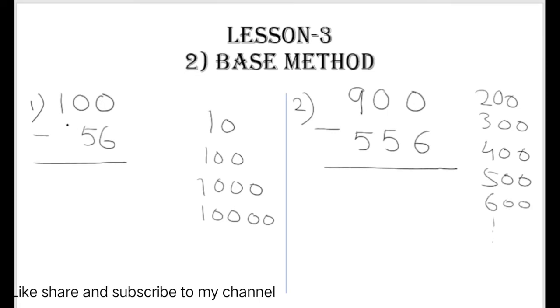So we will see both examples one by one. Now first, in this first example, base method, we can subtract 56 from 100, in which what we have to do is follow the complements, in which all from 9 and the last from 10.